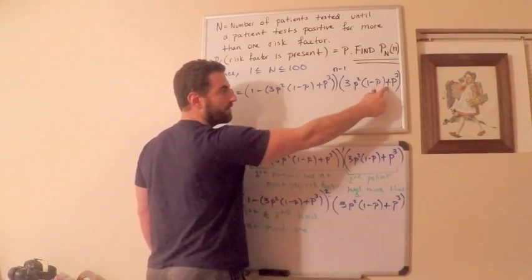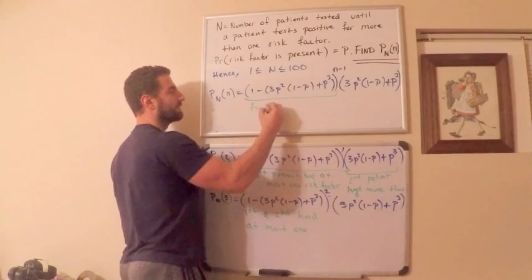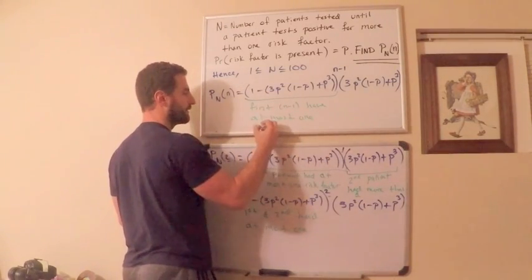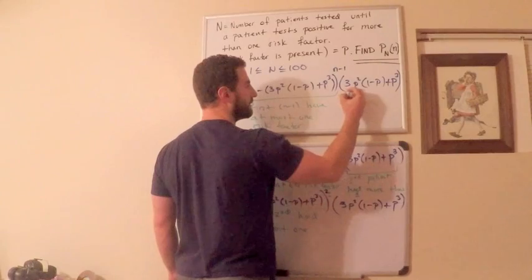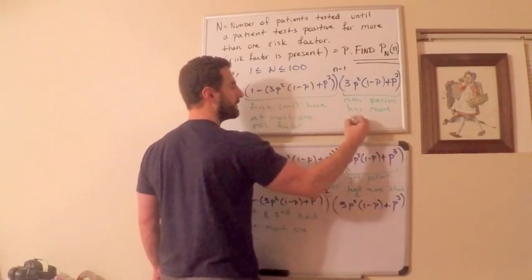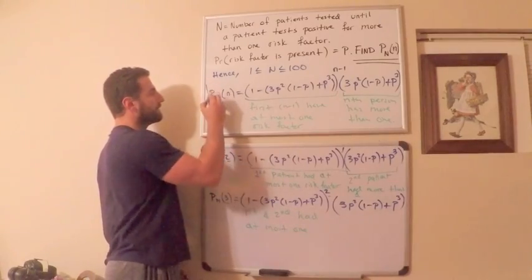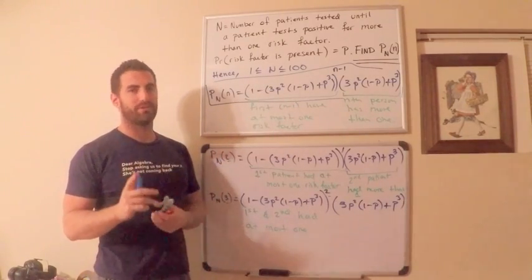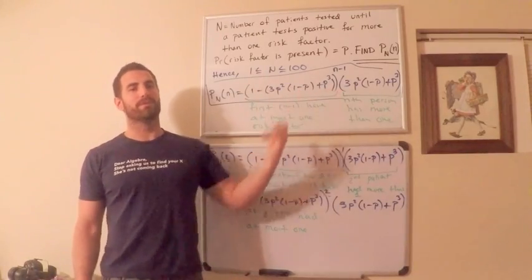They either have two or they have three, so the n-th patient's probability is 3p²(1-p) + p³. This right here is my probability mass function — that is my answer. As you can see, this exactly follows a geometric distribution. It's just that my probability of success is 3p²(1-p) + p³, which is complex, but it very much looks like the number of trials until the first success.